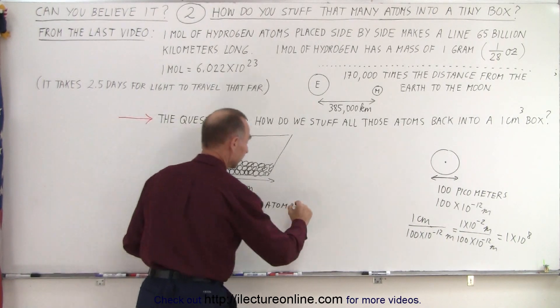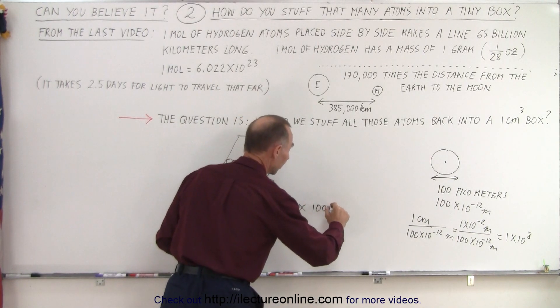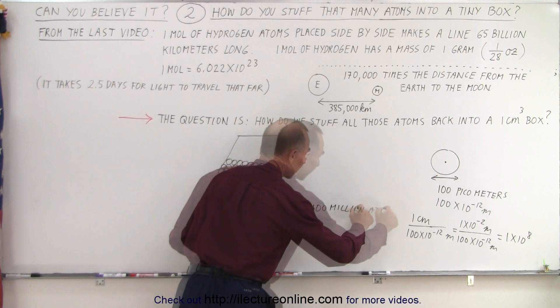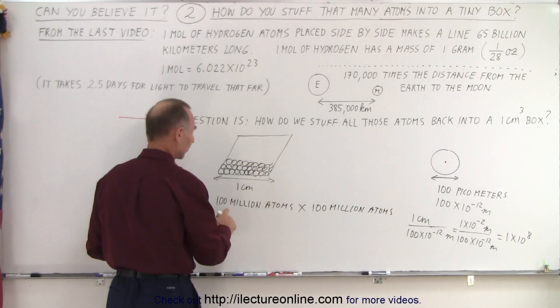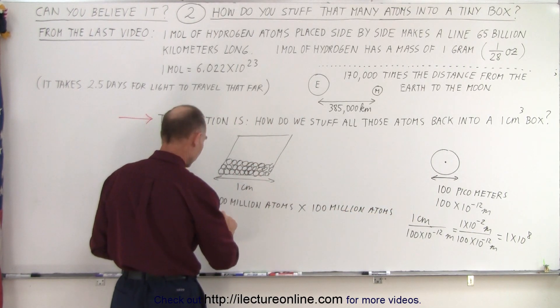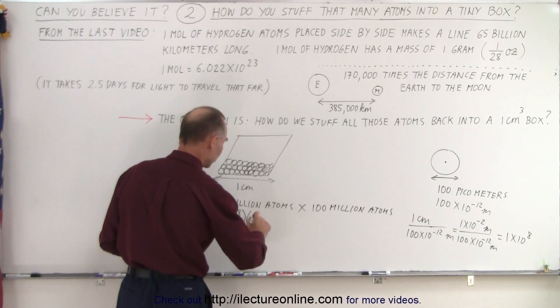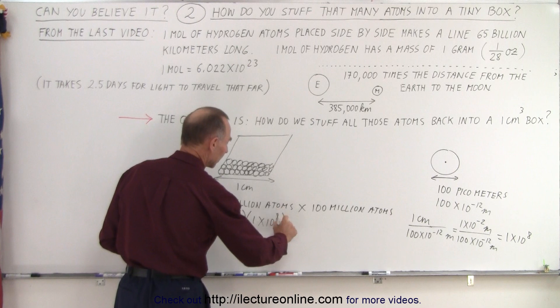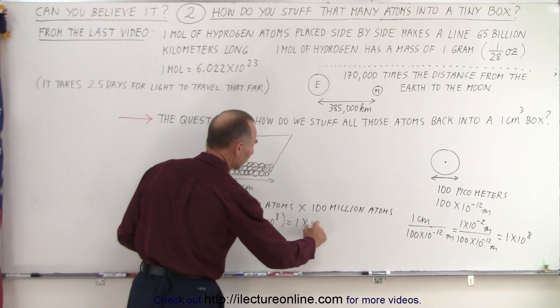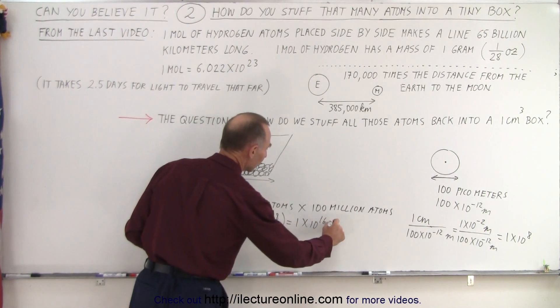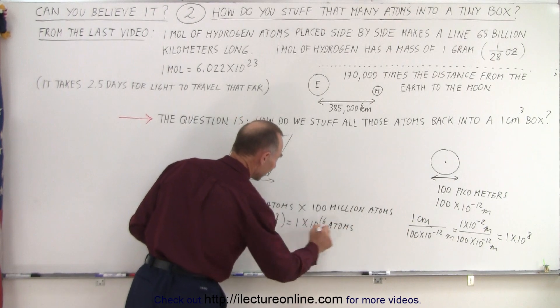How many atoms do you have now? It would be 100 million times 100 million atoms. That's 1×10^8 times 1×10^8, which gives us 1×10^16 atoms in a very thin layer, 100 picometers thick, at the bottom of that cube.